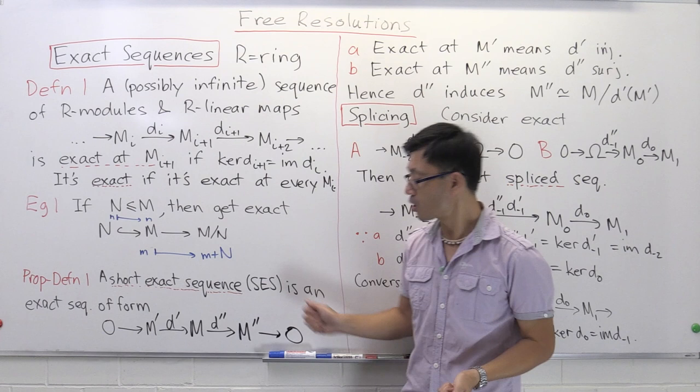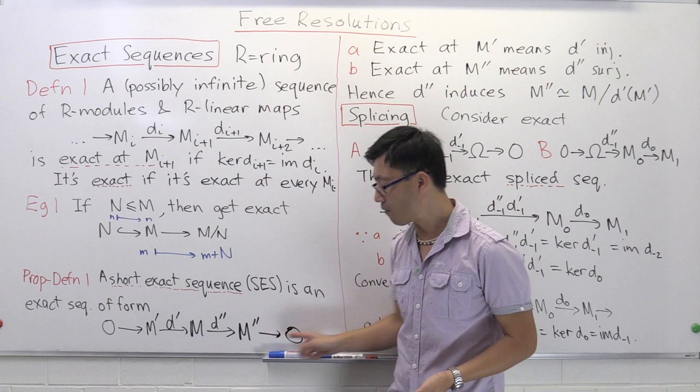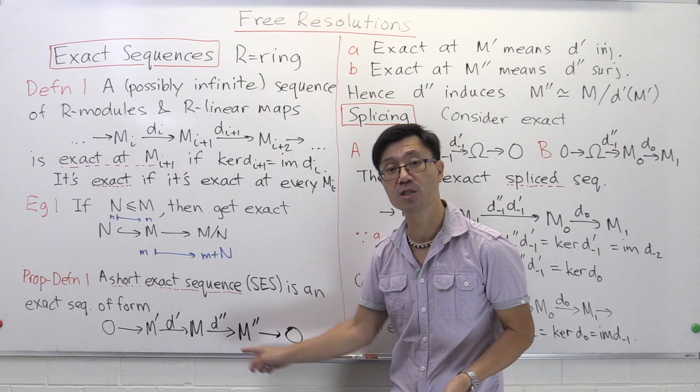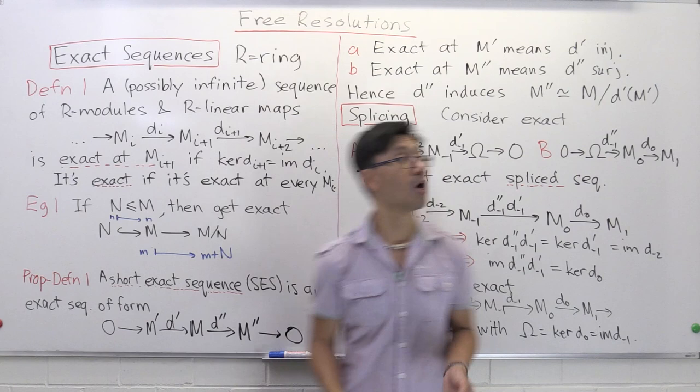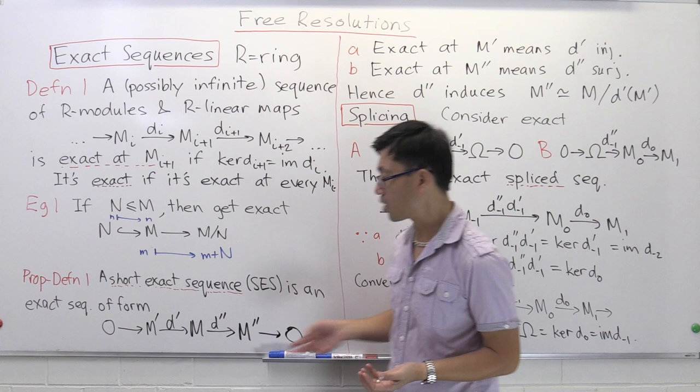On the other side, exactness at M'' means the kernel of the map to zero equals the image of d''. The kernel of the zero map is all of M'', so the image of d'' must be all of M''. That means d'' is surjective. So exactness at M'' means precisely that d'' is surjective. To get a short exact sequence, you need an injective map d', a surjective map d'', and the kernel of d'' equal to the image of d'.